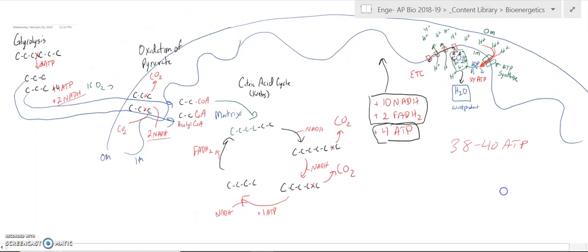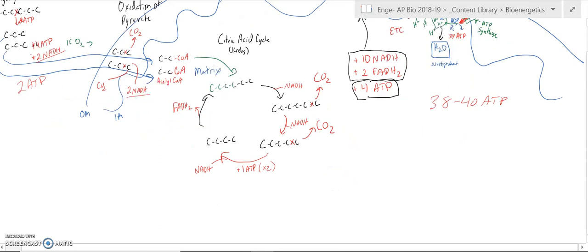You might ask, why is that number varied? Well, the two that are formed here are always two per sugar. And the two that we get here are two times through the citric acid cycle. They are always two ATP total.